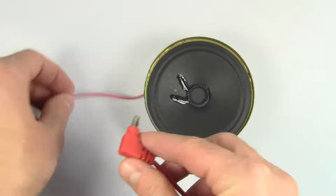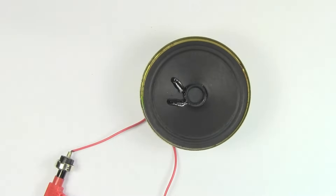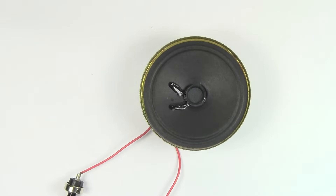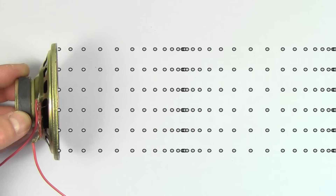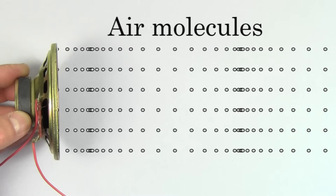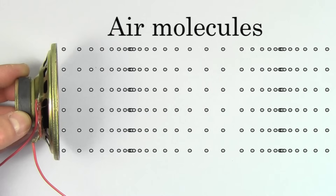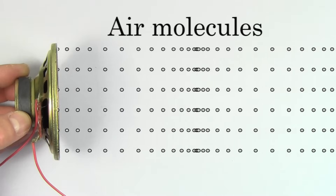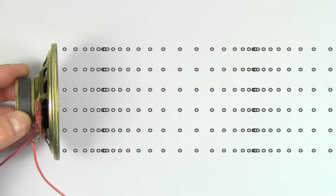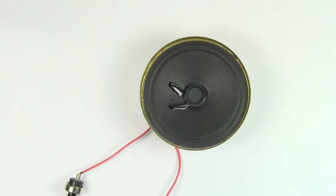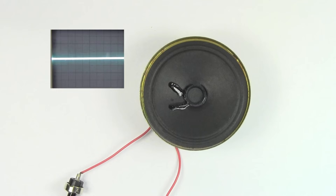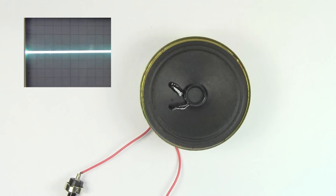This is what a sound wave sounds like. But what does a sound wave look like? The air through which the sound wave is traveling looks something like this. But if you want another visual representation of the sound, we can hook this speaker up to an oscilloscope and it gives us this graph.